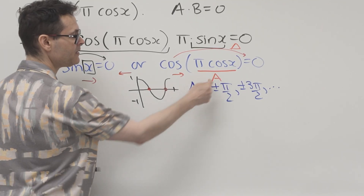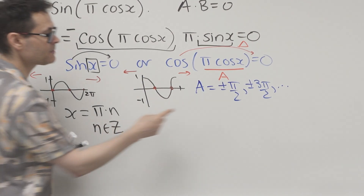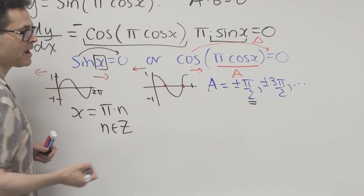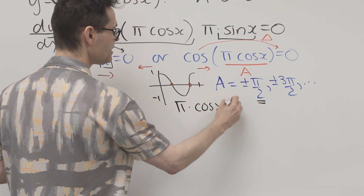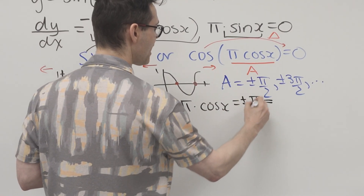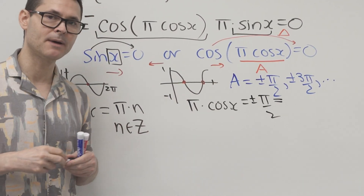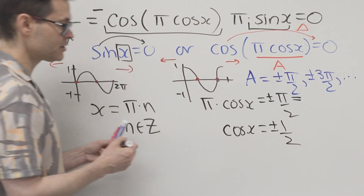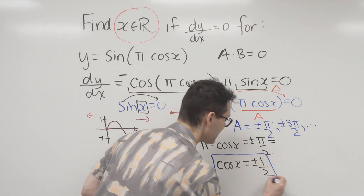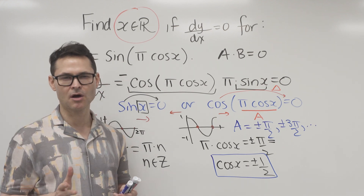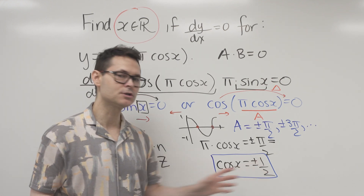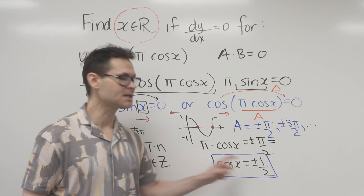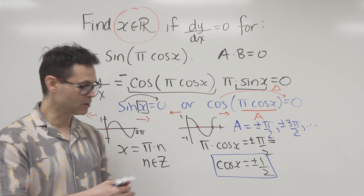Now I let those angles equal the inside expression. Setting pi·cos(x) equal to plus or minus π/2 — notice both sides divide by π — this simplifies to cos(x) = ±1/2. That's a pretty straightforward trigonometric equation. The value 1/2 comes from a special triangle, and I need all four quadrants since both positive and negative cases apply.